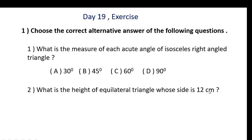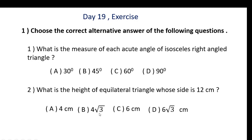Second question: What is the height of an equilateral triangle whose side is 12 cm? Options: 4, 4 root 3, 6, 6 root 3. Draw the equilateral triangle and find its height. Using the 30-60-90 theorem, the height is opposite the 60-degree angle, so height equals root 3 upon 2 into hypotenuse, which gives root 3 upon 2 into 12 equals 6 root 3. The answer is option D: 6 root 3.